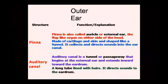The second component is the auditory canal, also called a tunnel or passageway, that begins at the external ear and extends inward toward the eardrum. It is a long tube with a lining of fine hairs — those small hairs you find in your ears are in this auditory canal. It directs sound to the eardrum. The ear canal is roughly 3 cm long in adults.